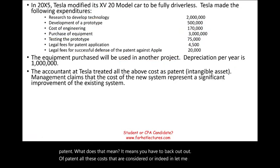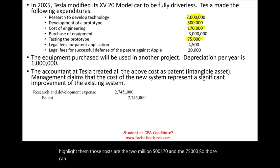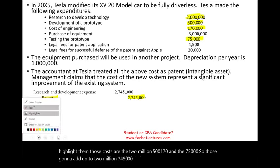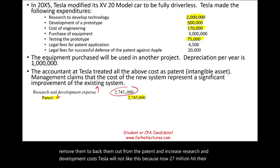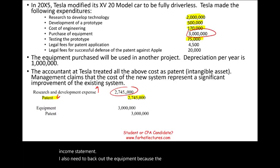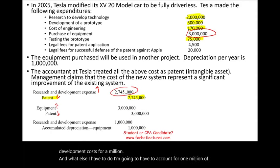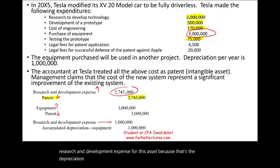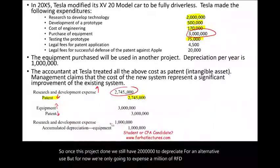So we must back out of the patent all costs considered R&D: the $2,000,000, $500,000, $170,000, and $75,000 — totaling $2,745,000. We credit the patent to remove them and debit research and development expense. Tesla would not like this because $2.745 million now hits their income statement. We also back out the equipment from patent and record it as its own asset. Additionally, we record $1,000,000 of R&D expense for depreciation on that equipment, crediting accumulated depreciation. Once this project is done, $2,000,000 remains to depreciate for the alternative use.